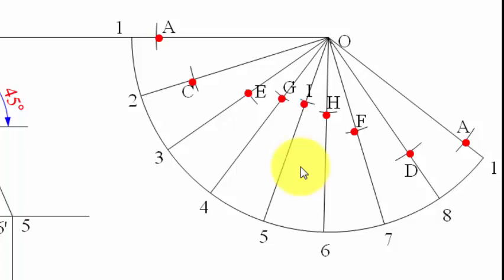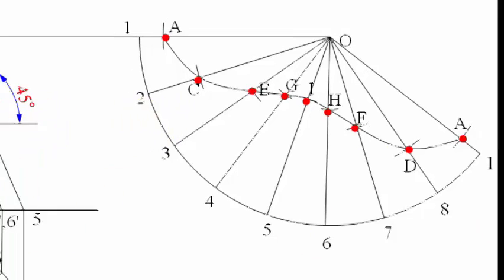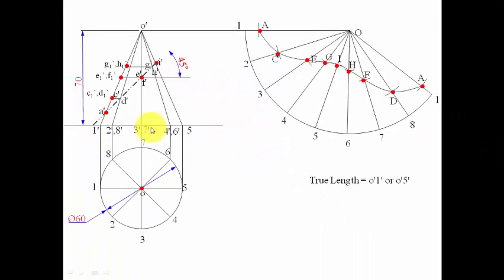Now we join all points A, C, D, E, F, G, H, I in proper sequence with a smooth curve — that is the development of the cone. Finally, darken the portion lying below the cutting plane in the development as well, and the completed drawing should look like this.